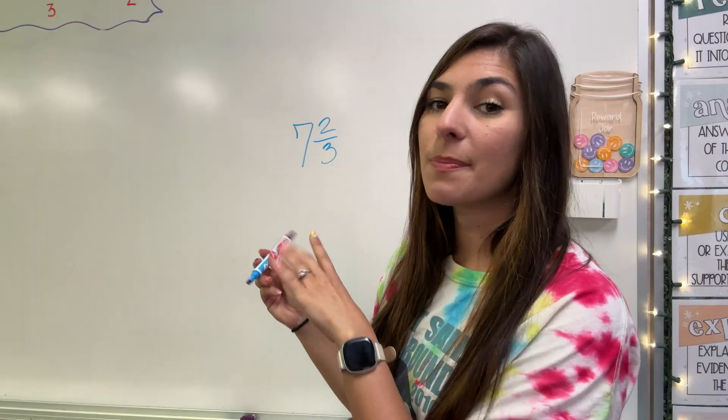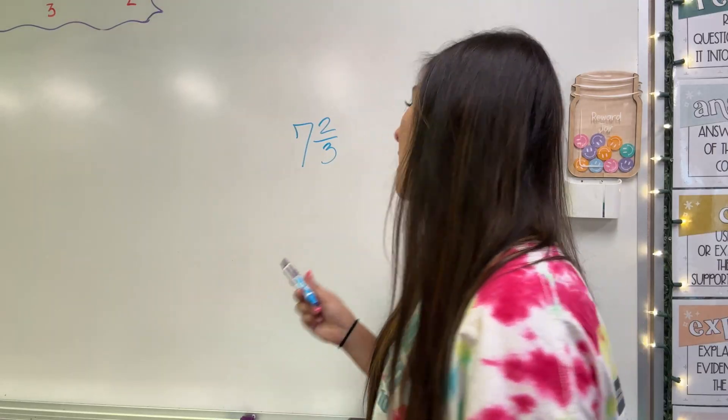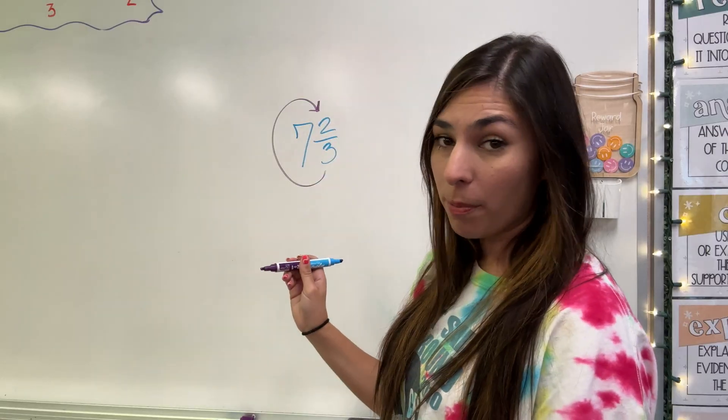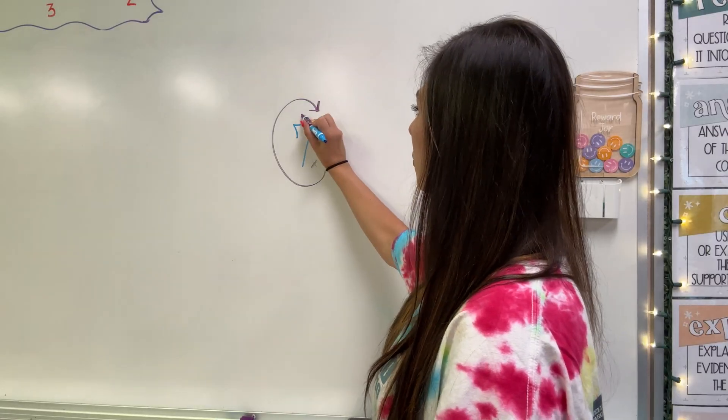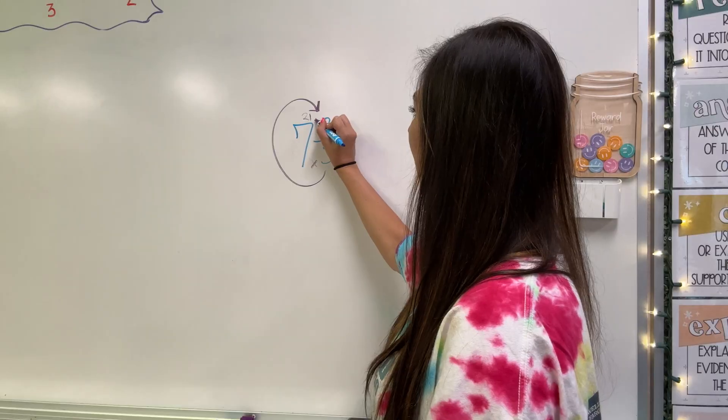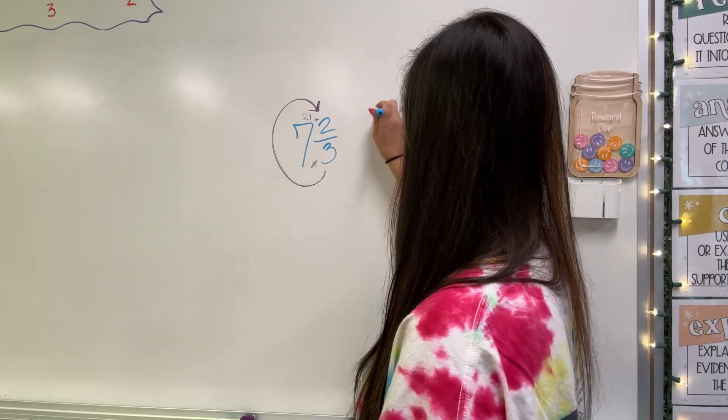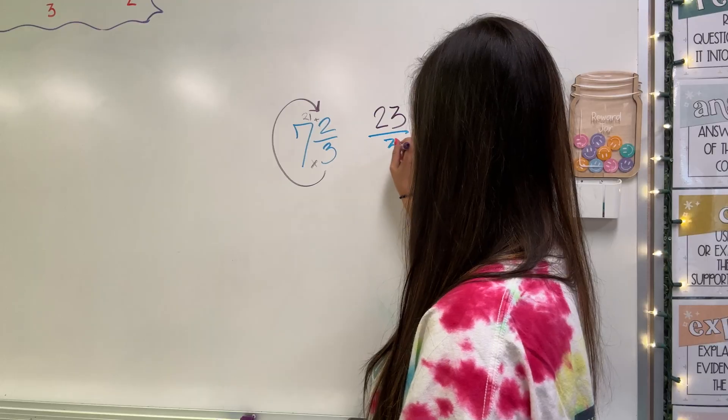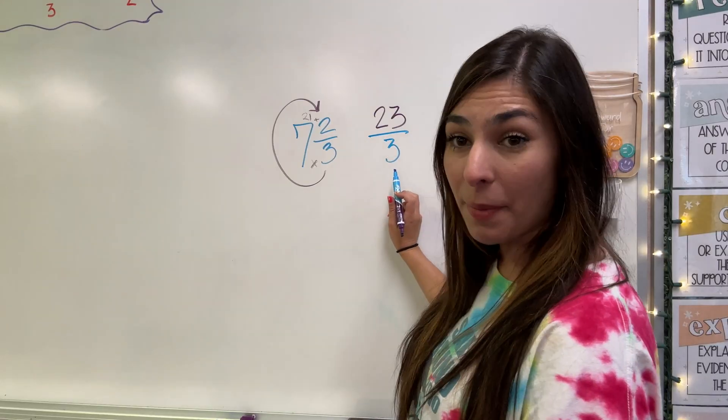Seven and two thirds. That is my mixed number, whole number and fraction. We're going to use the reverse C method to turn it into an improper fraction. Three times seven. That's going to give me 21. And then I'm going to add my leftover two. So that's going to give me 23. Keep the denominator over three.